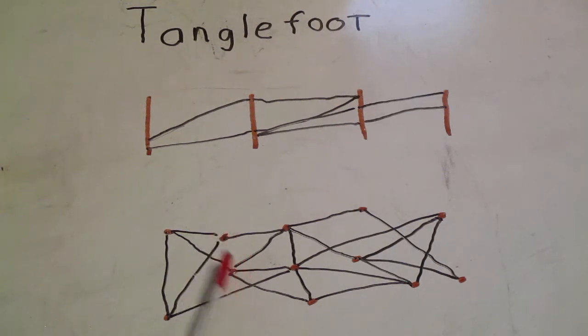Then you would start stringing barbed wire between the posts. The guidance was the wire should be put in from between ankle to knee high. You didn't want it too high because someone could crawl underneath, and you didn't want it too low because someone could just easily step over the top. So you're supposed to do random heights and also random directions.